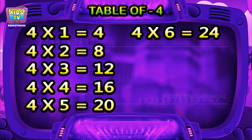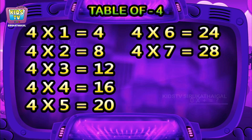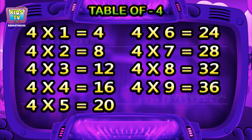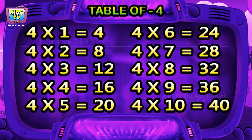Four seven is twenty eight, four eight is thirty two, four nine is thirty six, four tens is forty.